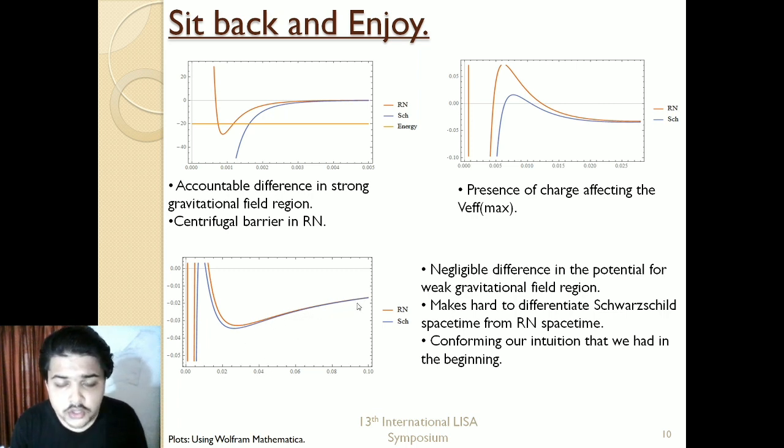In the third image, this is the weak gravity region. You can see negligible difference in the weak gravity region; the potentials are approximately matching. This makes it hard to differentiate. Imagine a star in the weak gravity region and you want to be able to differentiate whether the central body is a black hole or a naked singularity, or is it a Schwarzschild black hole or a Reissner-Nordström black hole.